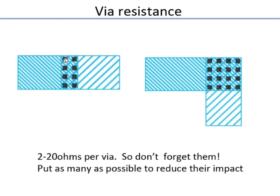Vias are vertical connections between different layers and usually have a fixed geometry — a small square — but you can put as many as you want to reduce resistance. You cannot change the size of the square. Each via has quite a bit of resistance because they are really small, so you want to use many of them in parallel to reduce overall resistance.